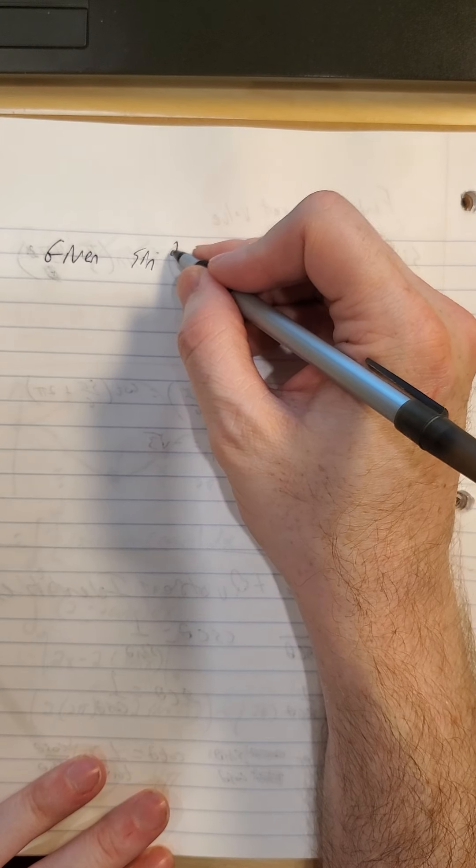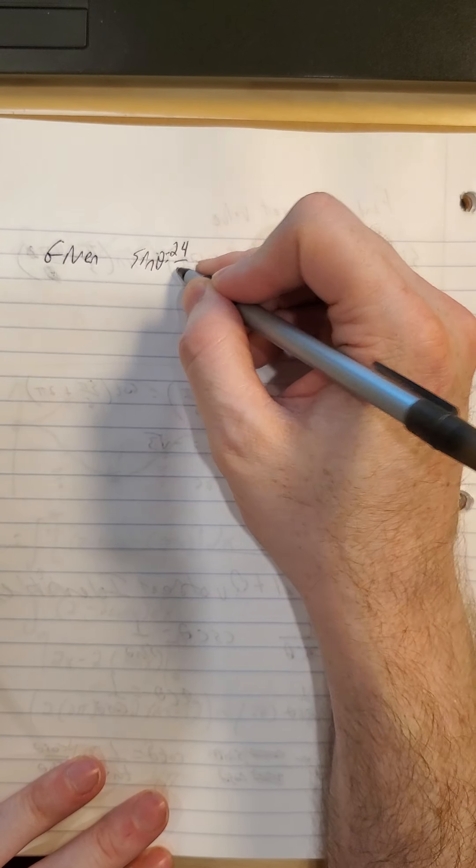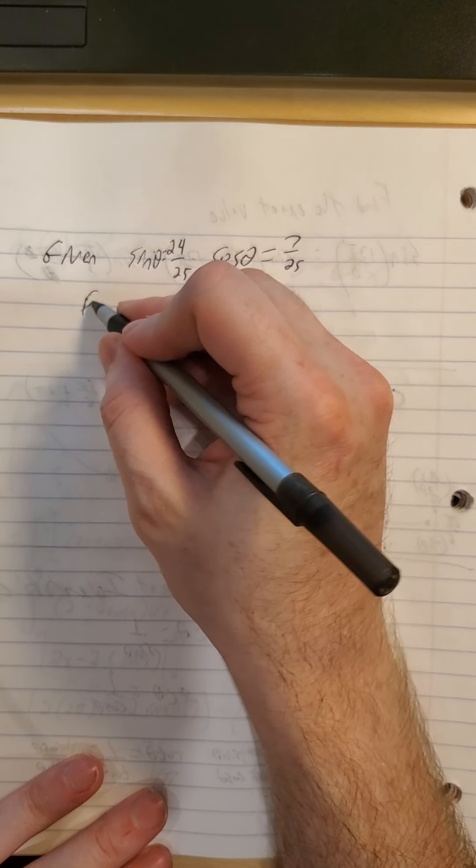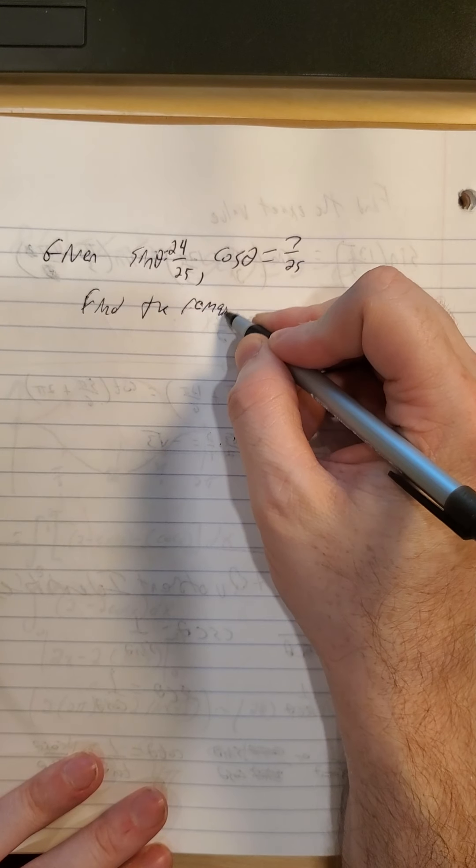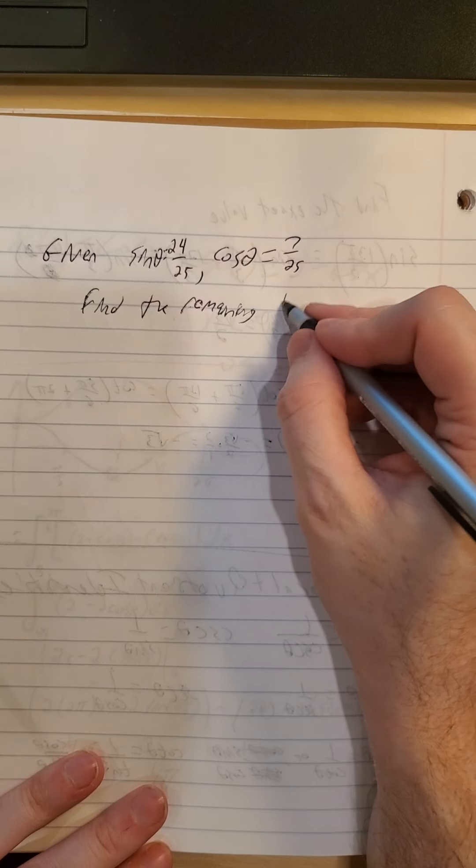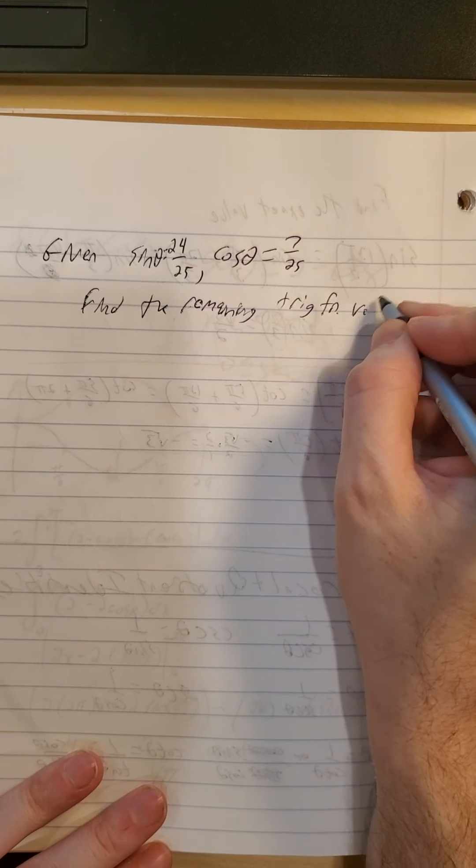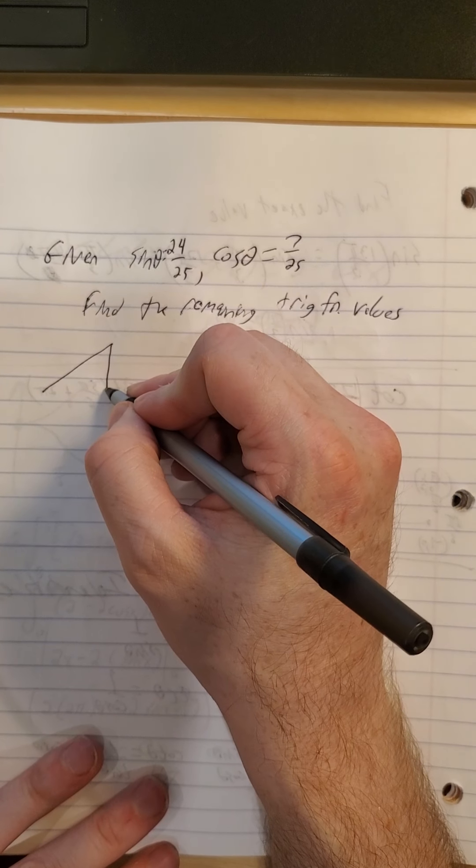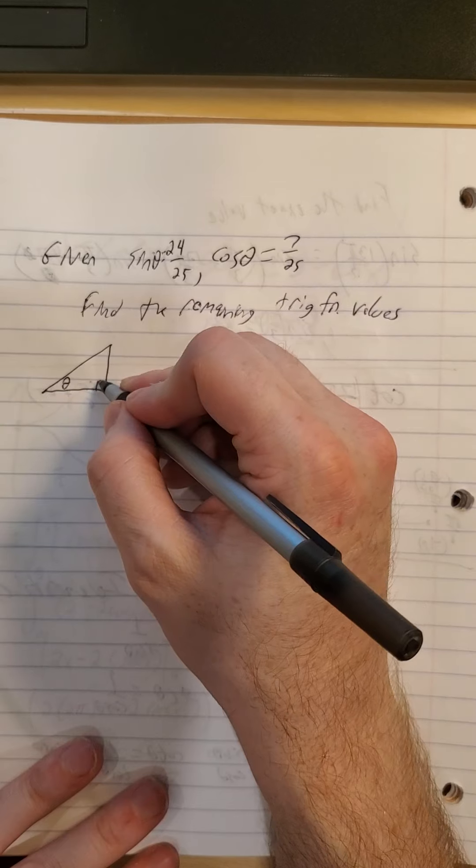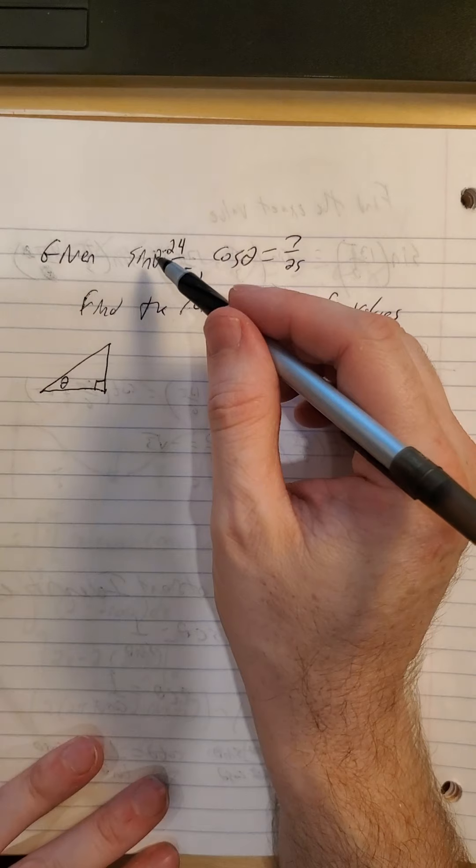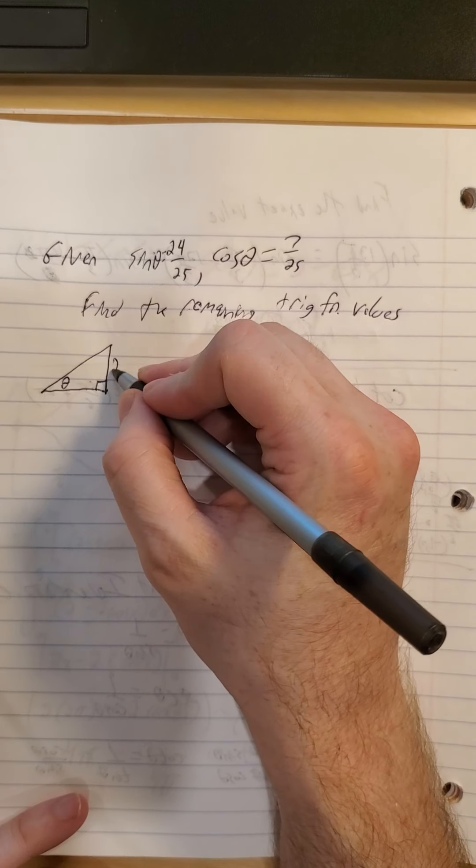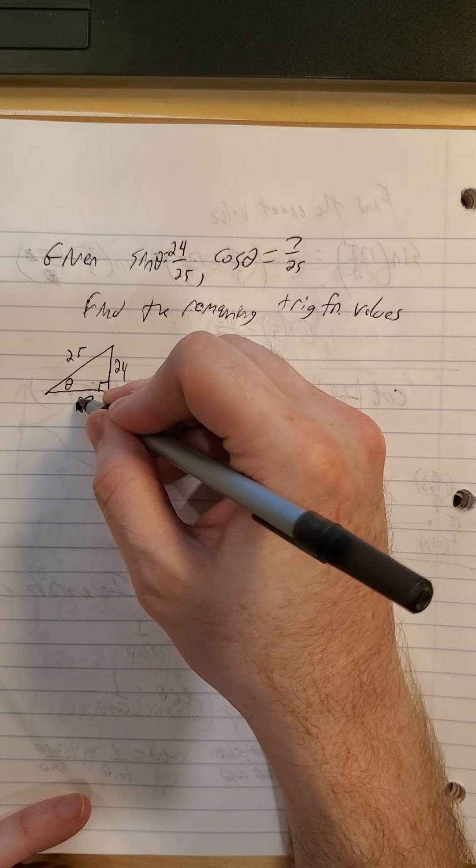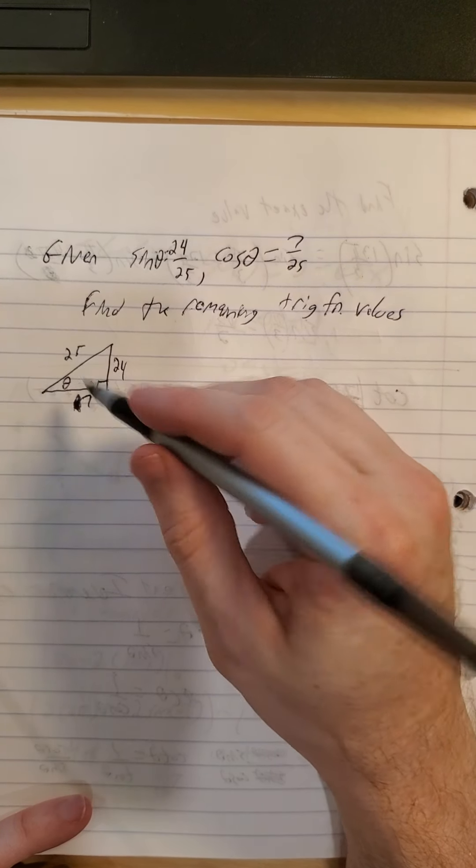So if we're given, let's say, sine of theta is 24 twenty-fifths, and cosine of theta is 7 twenty-fifths. They can ask us to find the remaining trig functions. So on this one, I like to just kind of draw it out. So here's our theta. Here's our right angle. So sine is y over hypotenuse. Cosine is x over hypotenuse. So x here is 7. So we have a 7, 24, 25 triangle.